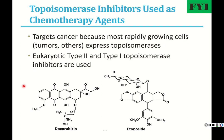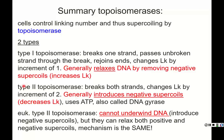In summary, topoisomerases control the linking number and thus the supercoiling in a segment of DNA. Type I breaks one strand, changes the linking number by increments of one, and generally relaxes DNA by removing negative supercoils, increasing the linking number. Type II breaks both strands and changes the linking number by increments of two. In bacteria, they introduce negative supercoils decreasing the linking number — using ATP — and are referred to as DNA gyrase. Eukaryotic type II topoisomerases can't underwind the DNA or induce negative supercoils, but they can relax both positive and negative supercoils.